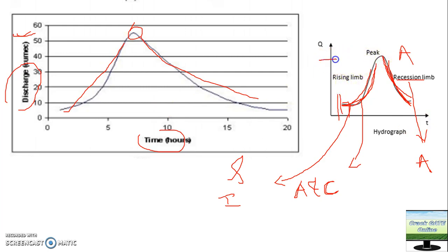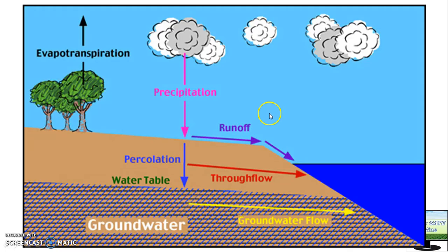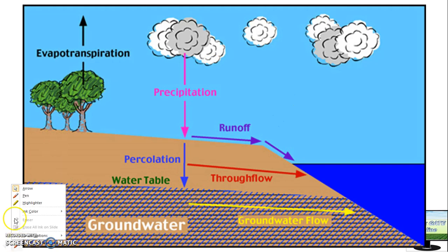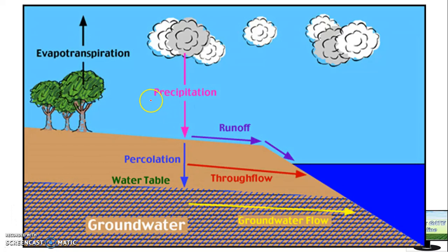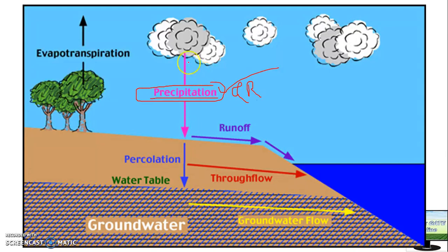Before going into the main hydrograph area, I have already explained some concepts in a previous video — please watch that video also. Tell me in the comment section: what is the difference between precipitation and rainfall? Now, suppose rainfall is happening — what will happen is that certain water will infiltrate into the soil.